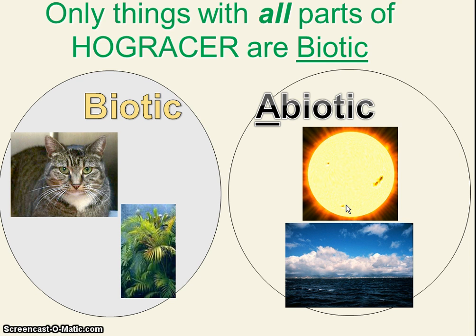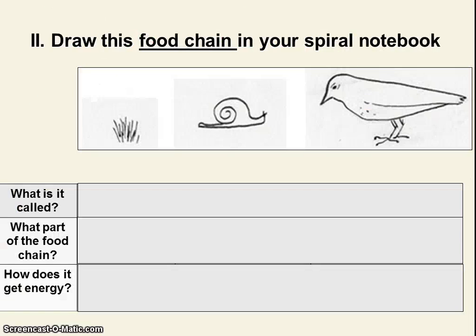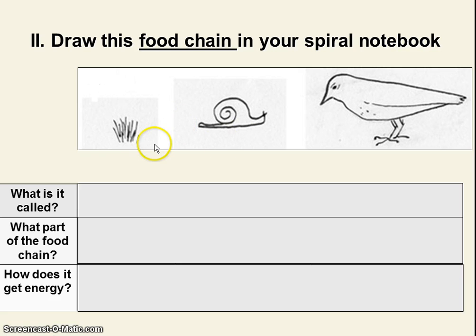We're going to move on to another idea. Because it's a brand new idea, we're not going to put it under the previous Roman numeral. Get ready to do Roman numeral number two. We're going to pause here because it's going to take a while to draw. Draw this food chain in your spiral notebook or on your sheet. You're going to want to draw these out — if drawing is not your thing, write plant, snail, bird. That's fine.